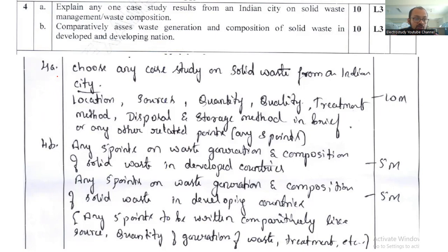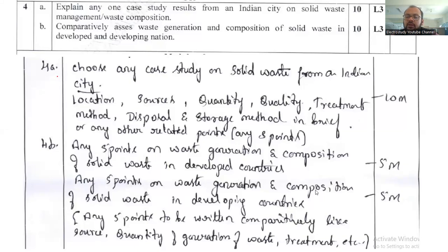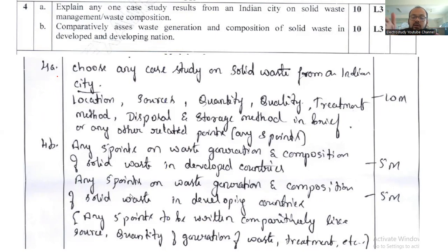Question 4b asks for a comparative analysis of waste generation and composition of solid waste in developed and developing nations. Prepare a table with one column for developed countries and another for developing countries, and elaborate at least 10 points each. For example, compare wet content, carbohydrate-based bio-waste, and which type of nation produces more of each. This comparative checklist is more than sufficient for 10 marks.